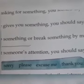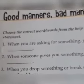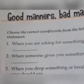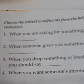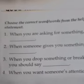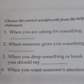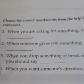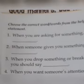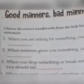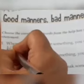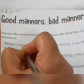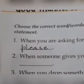The first sentence is: when you are asking for something, you should say — blank. What should we say when we are asking for something? We should say please. Please, may I have this copy? Please, may I have this biscuit to eat? We say please. So we will write 'please' in the first blank. You can copy the spelling from the help box: P-L-E-A-S-E. Please. Done.